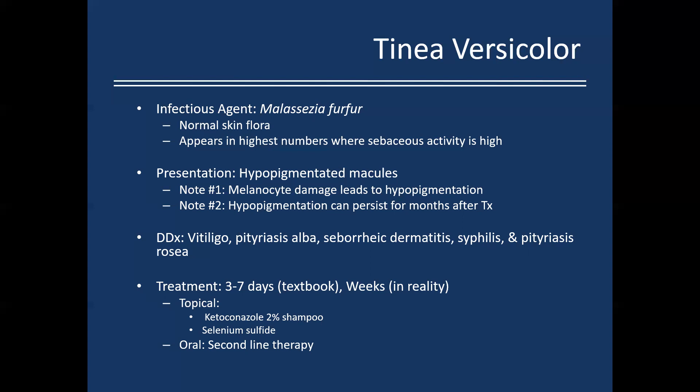The differential for tinea versicolor includes vitiligo, pityriasis alba, seborrheic dermatitis, syphilis, and pityriasis rosea. For treatment: topical ketoconazole or selenium sulfide shampoo. The textbook says three to seven days, but in practice it really takes weeks. I prescribe the shampoo as their new body wash — two to three times per week for a month — and counsel that it'll take another month or two for the skin to normalize. Since it's not really contagious and mainly cosmetic, I stick to topicals.